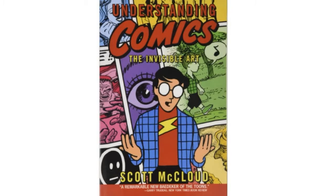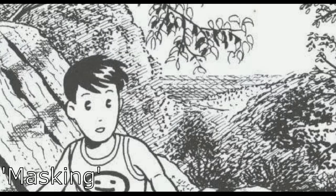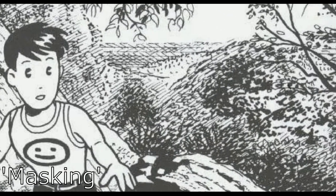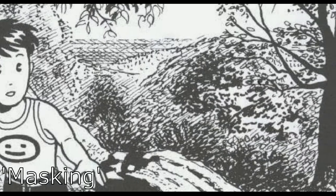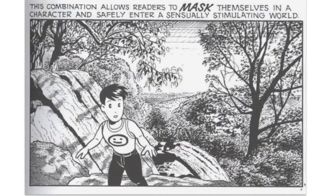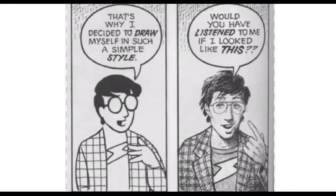In Understanding Comics, Scott McCloud writes about this idea of masking. It's a term he uses to describe the visual relationship between the backgrounds and the characters in comics, and how it enhances the experience for the reader. When a character is drawn in a more simplistic, iconographic style than the background, we as the reader tend to identify with that character, since its organic lines and simplicity of design make it the more emotionally relatable element of the image.